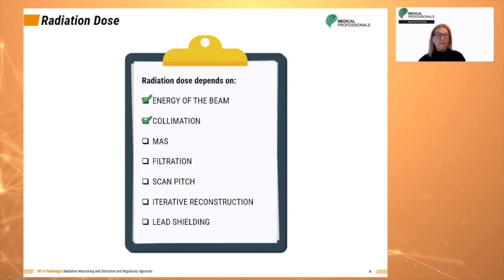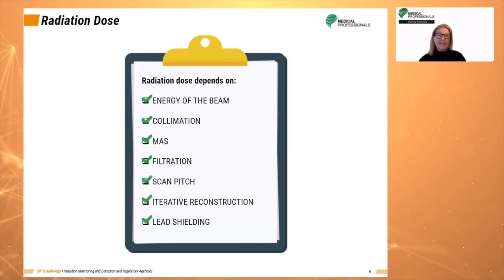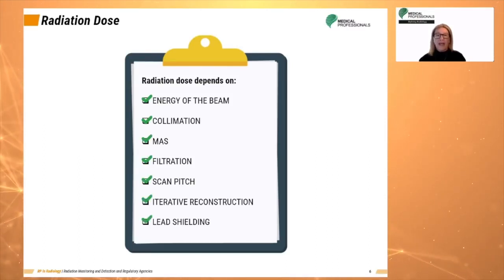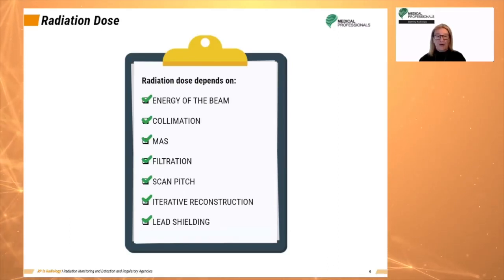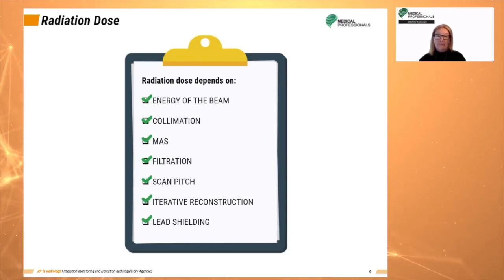There are many factors that influence the radiation dose in CT. The radiation dose in CT scanning depends on the energy of the beam, the beam collimation, the MAS value, filtration, the scan pitch, iterative reconstruction, and lead shielding.